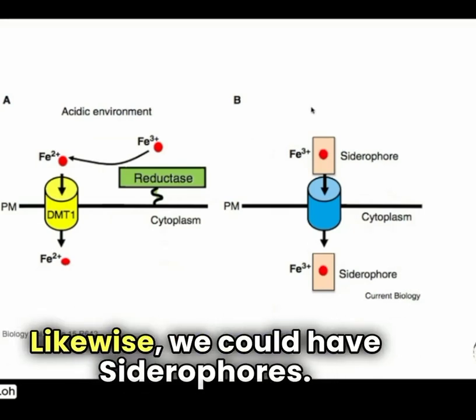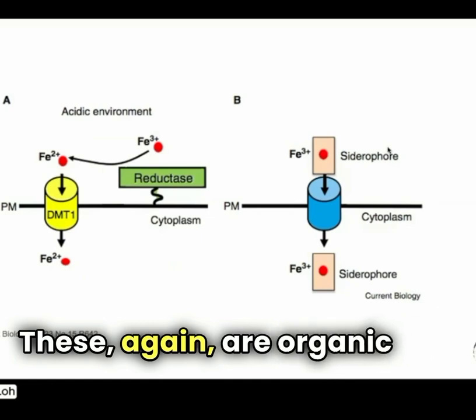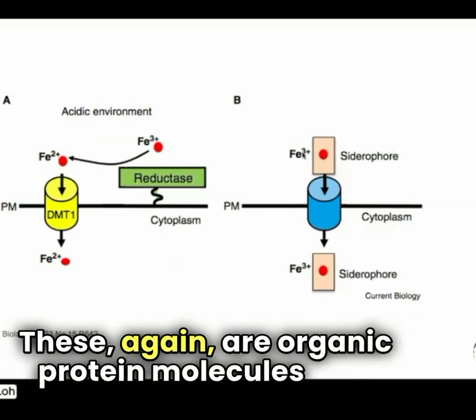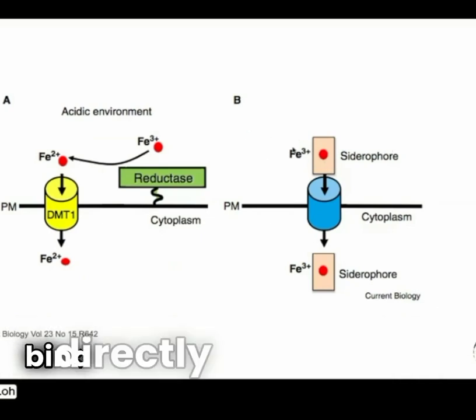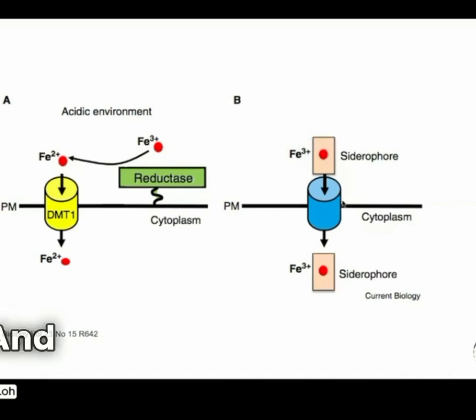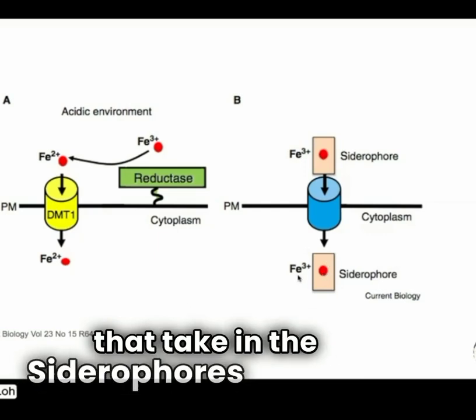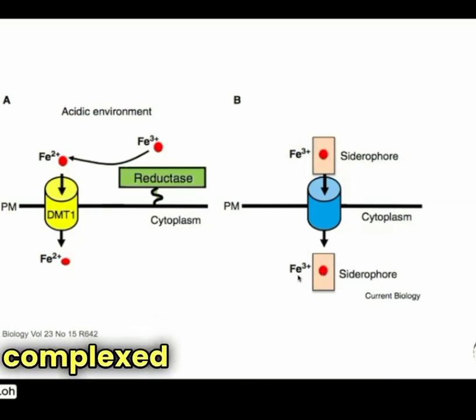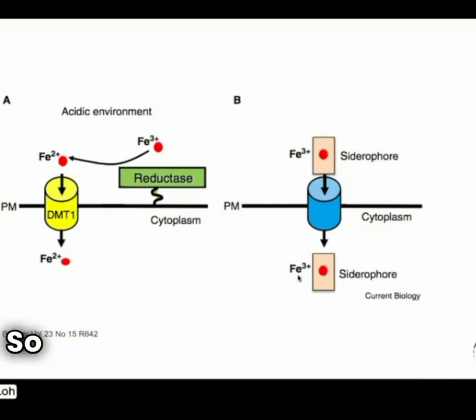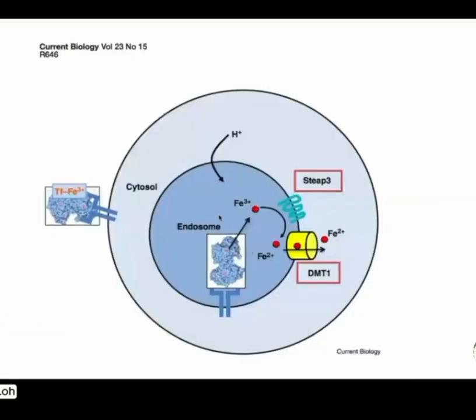Likewise, we could have siderophores. These again are organic protein molecules that bind—they bind directly to the Fe3+—and then we have special transporters that take in the siderophores with the complexed iron into the cell. So these are different ways that we can bring iron into the cell.